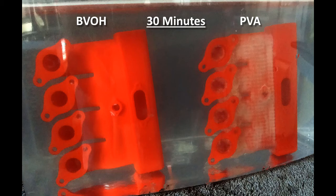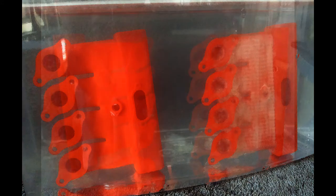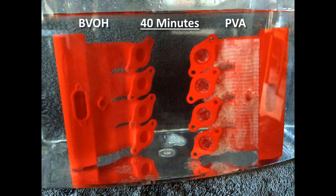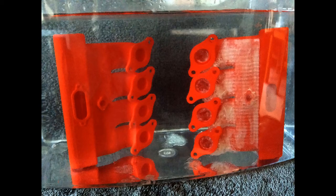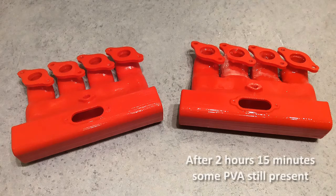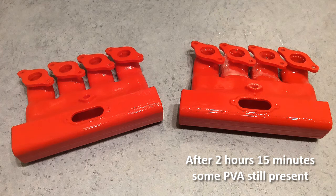After 30 minutes, the BVOH print was almost completely clear, the PVA not so clear. And after 40 minutes, then the BVOH print was totally clear. And the PVA print barely changed in that 10 minutes. And reality was even after two and a quarter hours when I took this print out, the PVA was still present in a number of areas on this print. And the reality was it took somewhere around four hours for that to disappear completely.